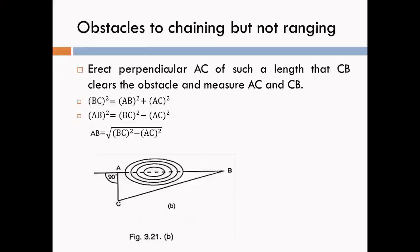Next, obstacles to chaining but not ranging — meaning chaining is not possible on the ground. Consider point A and point B on the ground. A is our starting point, B is our ending point, and AB is our survey line. In between A and B there are some obstacles; for example, a pond is here.